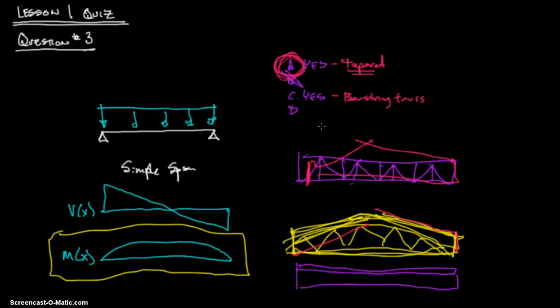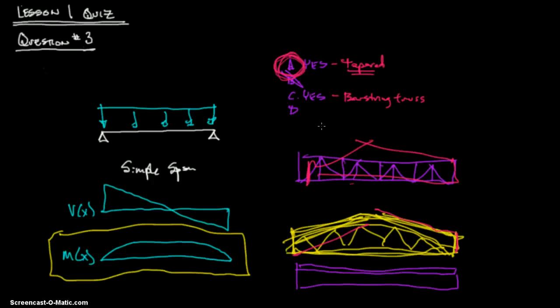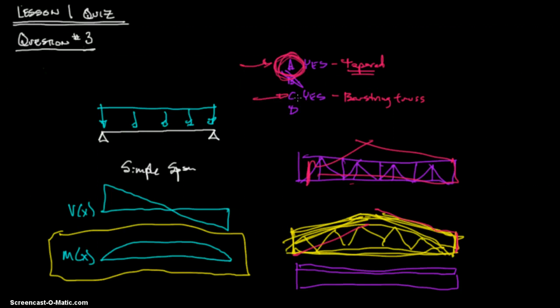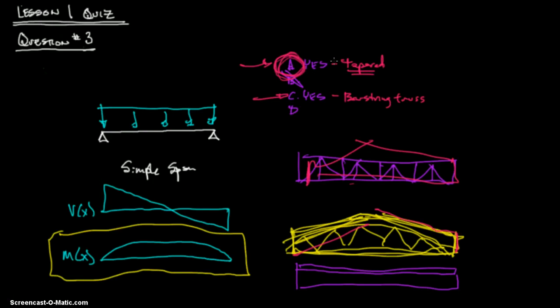I think bowstring truss would have been the best answer. Let's go to the back and see what the answer is, at least the answer they gave us. Lesson one quiz, quiz answer. We are at number three. And they said A. Oh, they actually agreed with me, is A. But I wouldn't fault you for saying C as well. I don't think that's an incorrect answer. I think maybe A could be a better answer. If you would have said bowstring truss, I would have gone with bowstring truss in two seconds. Because I think it looks a lot like that moment diagram.